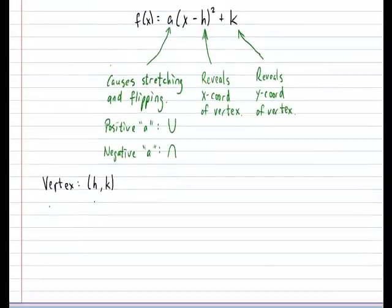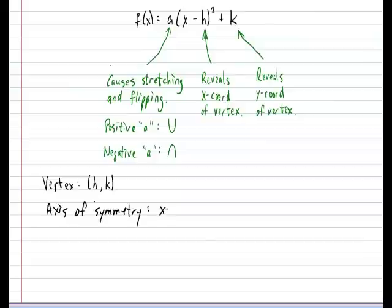This will also mean that our axis of symmetry, which corresponds to the x coordinate of the vertex, would lead us to conclude that the axis of symmetry from the standard form is given by x equals h, because h is the x coordinate of our vertex.